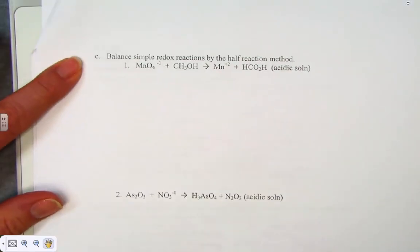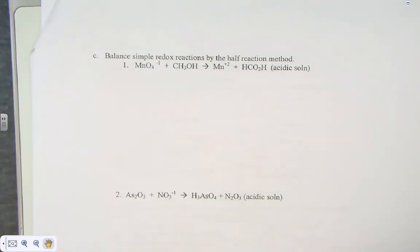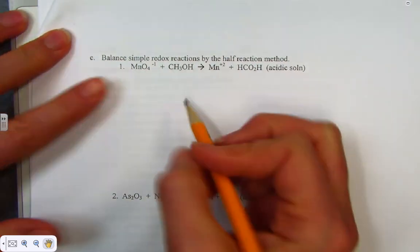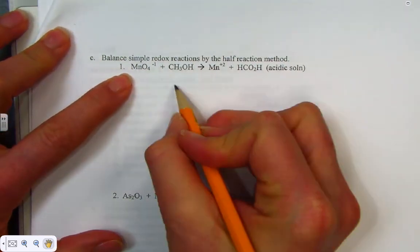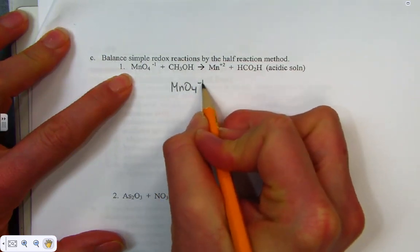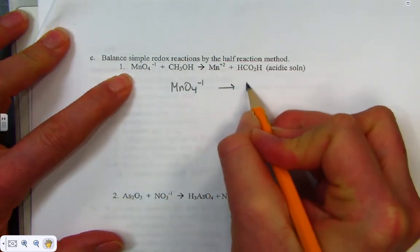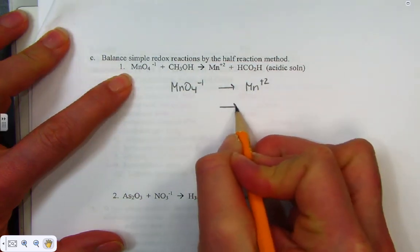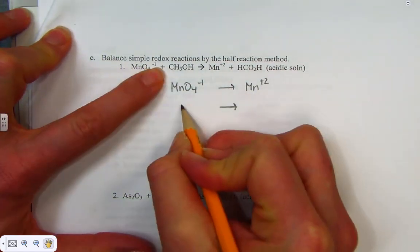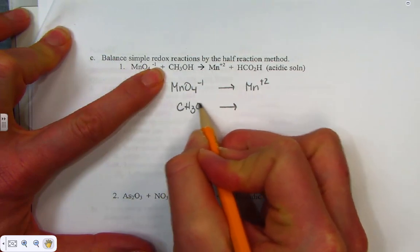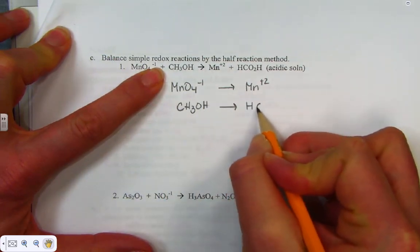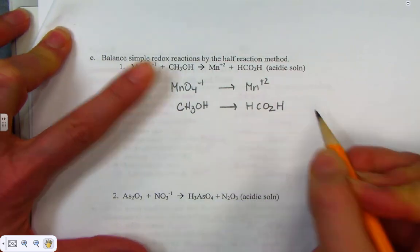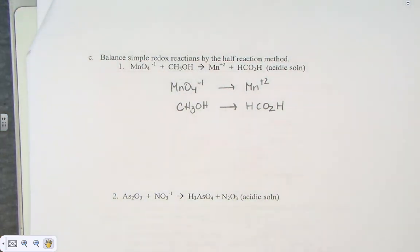Let's continue on to balancing. We'll work out some simple redox reactions by the half-reaction method. These are always a little complex, so I'm going to use a pencil. In my first half-reaction we have the permanganate ion, MnO₄⁻, forming Mn²⁺. In my second half-reaction, we'll convert methanol, CH₃OH, to HCO₂H. We're in an acidic solution.